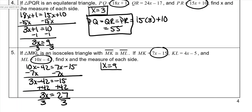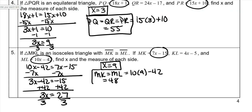Then I have to find the measure of each side. The two that are circled are the same, so MK equals ML. For me it's easier to deal with 10s, so I'll use the 10x expression. So 90 minus 42 is 48 for those two sides. Then I have to plug it into KL, which is 4 times 9 minus 5, so 36 minus 5 is 31.